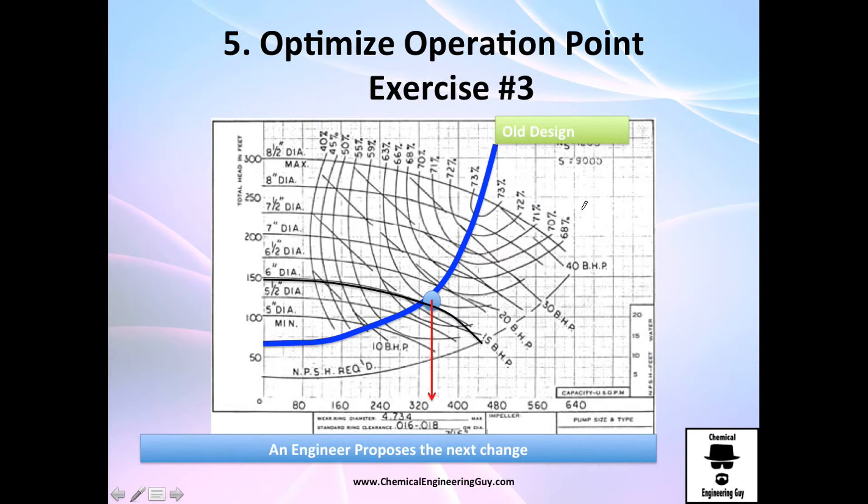And now let's do exercise number three. An engineer proposes the next change. So I have this all designed, I have this system curve, and we're using six diameter inch, and we are using 330 gallons per minute. So this guy wants to literally just increase from six to eight and a half inches and force the system to work here.